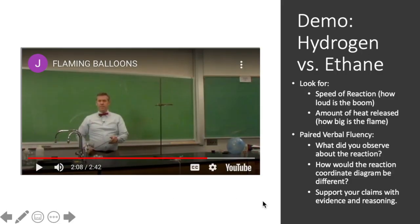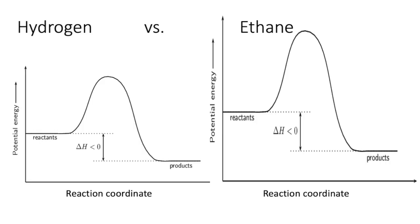Okay. So, you should have observed here that the boom was louder for hydrogen than it was for ethane. And the flame was bigger for ethane than it was for hydrogen. So, from those two pieces of information, we should assume that our hydrogen balloon happens faster because of the boom. And that our ethane balloon is more exothermic because of the flame. And the way that would translate into our reaction coordinate diagrams is if we had hydrogen over here on the left, for ethane, we would see a larger hill because it happened a little bit slower, hence the quieter boom. And we would see a deeper products over here on the right, because the enthalpy change would be larger.